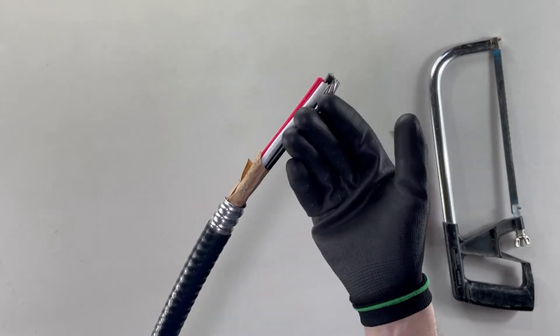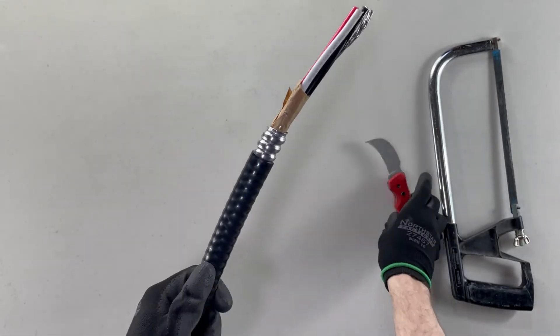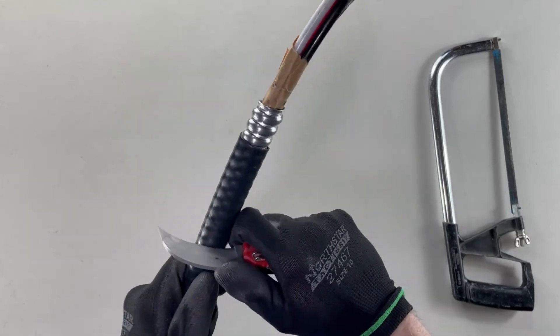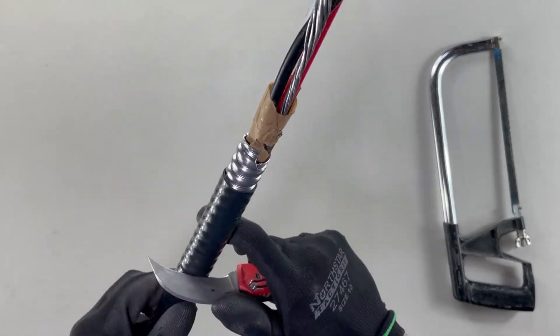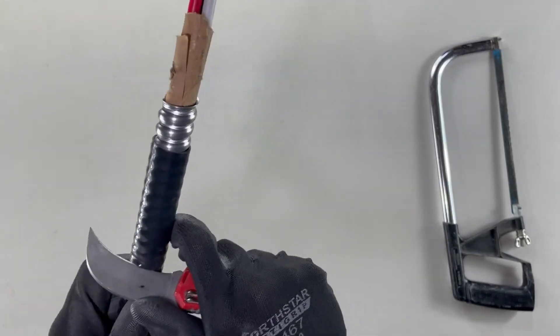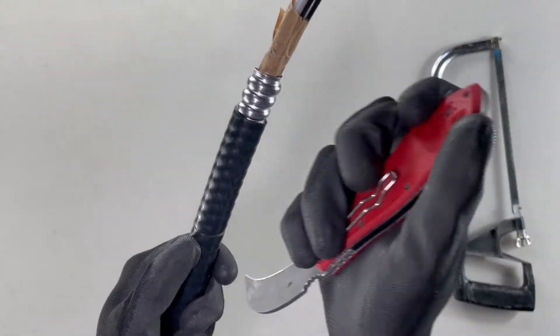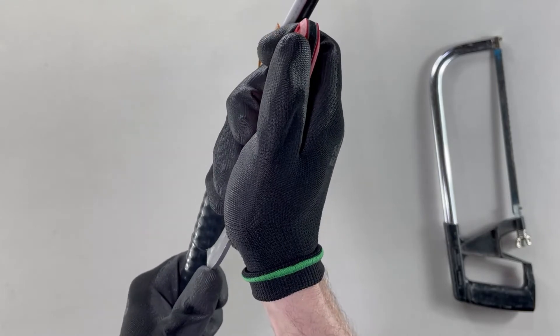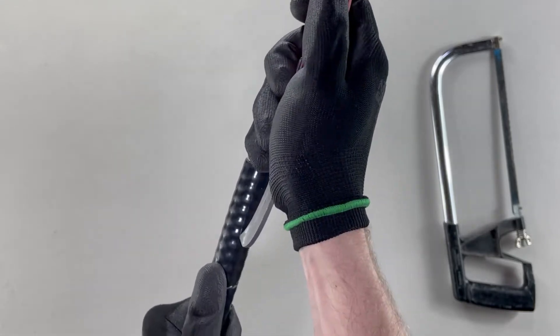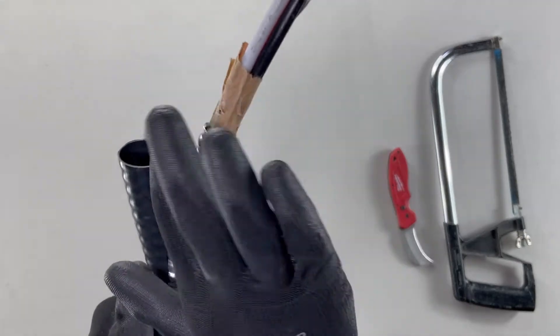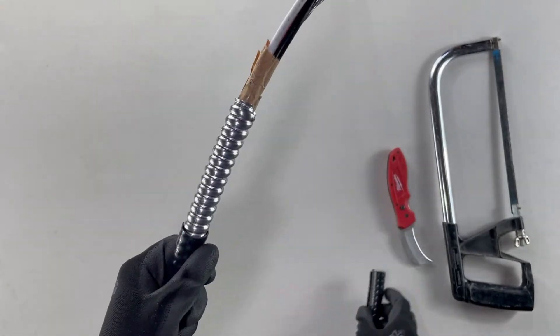First, you're going to identify how much you need, right? Then you're going to take your knife, and you're just going to cut around the exterior. You just want to create a slice in the rubber, and then you can run your blade up, like so. You can peel the exterior right off.